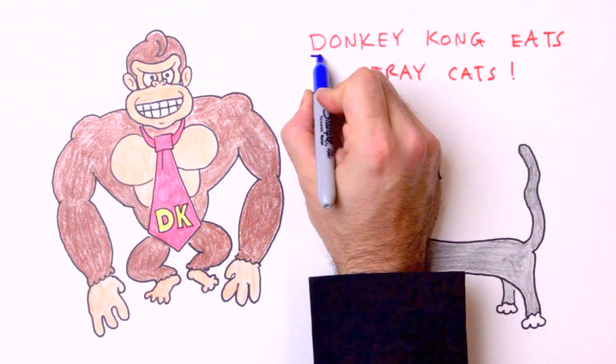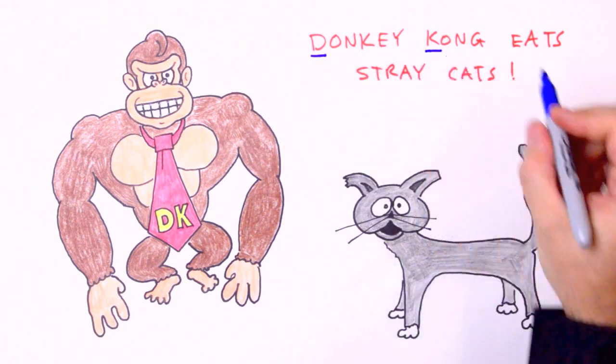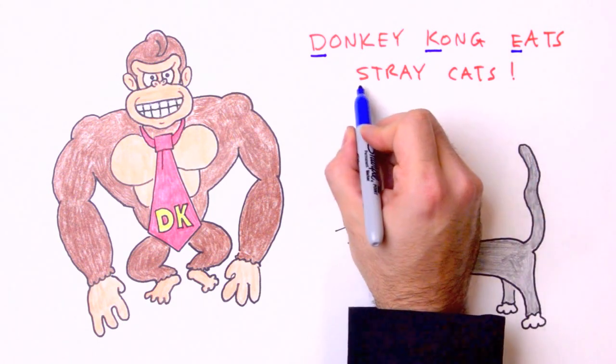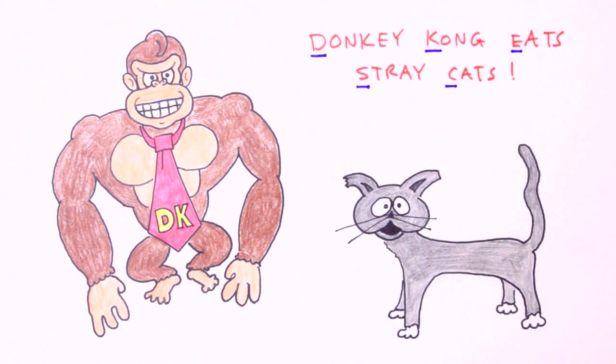So there it is. Draw a picture. Knowns and unknowns. Equation. Solve symbolically first. And check your answer. Donkey Kong eats stray cats.